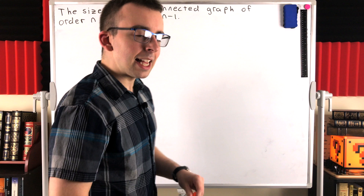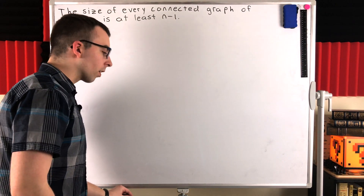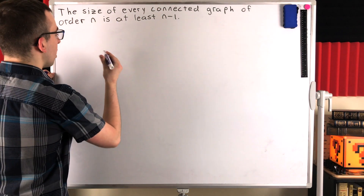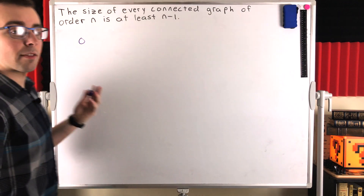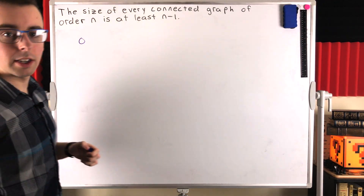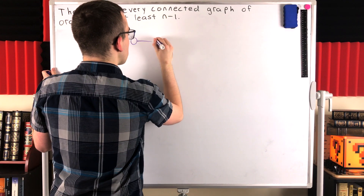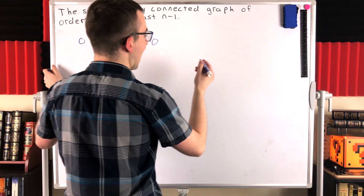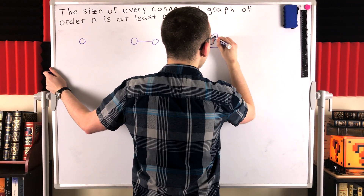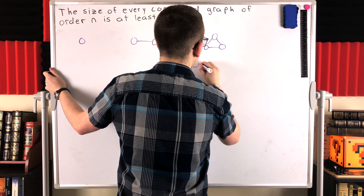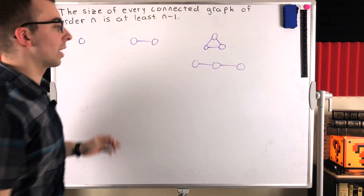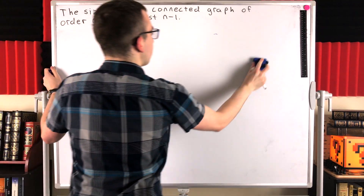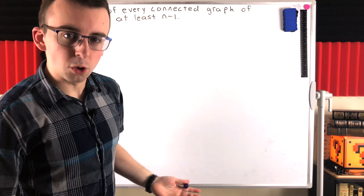We'll get into the proof in just a minute. Let's first just show that our result holds for all graphs of order 1, 2, and 3. A connected graph of order 1 has to look like that, and that fills our condition — it's got at least 1 minus 1, or 0, edges. Connected graphs of order 2, that's the only one, and it also satisfies our claim: it's got at least 2 minus 1, or 1, edge. Connected graphs of order 3, there are two such graphs and they both satisfy our claim as well — they both have at least 3 minus 1, or 2, edges. So our claim is true for graphs of order 1, 2, and 3.